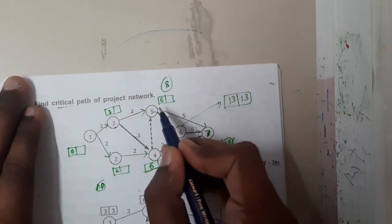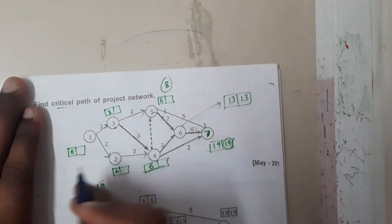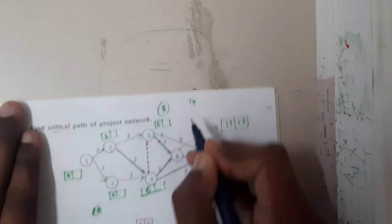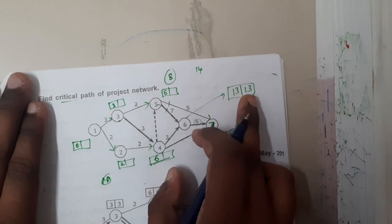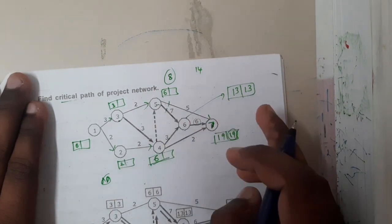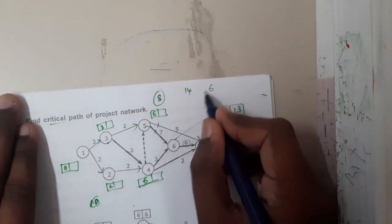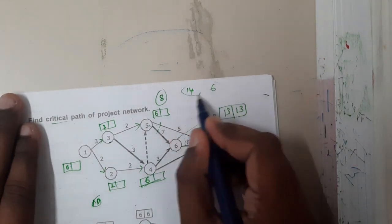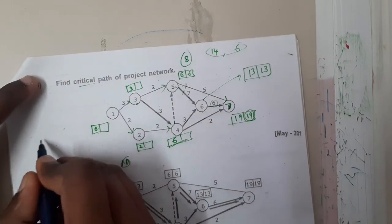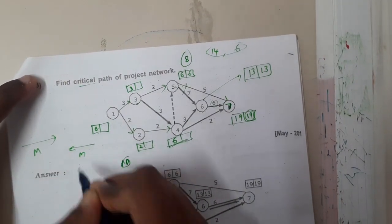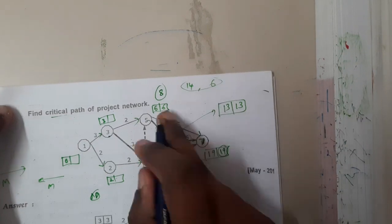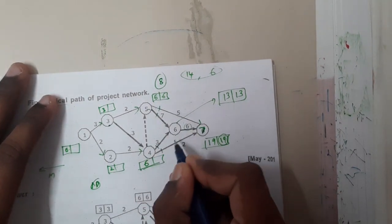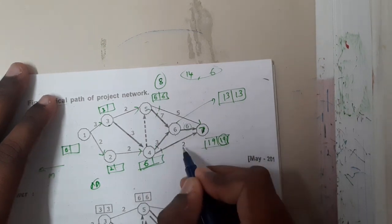For a node with only one outgoing path, the backward value is nineteen minus six, which is thirteen. For a node with two outgoing paths, we calculate nineteen minus five equals fourteen, and thirteen minus seven equals six. We take the minimum while coming back, so we select six. Remember: while going forward select maximum, while coming back select minimum — please don't confuse these. Continuing, one path gives thirteen minus three equals ten, and another gives nineteen minus two equals seventeen.